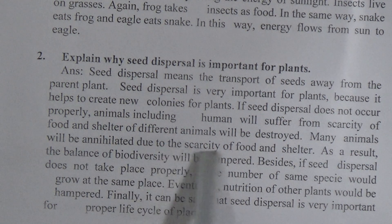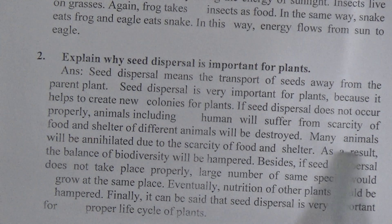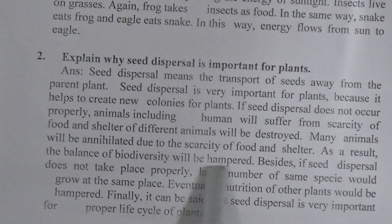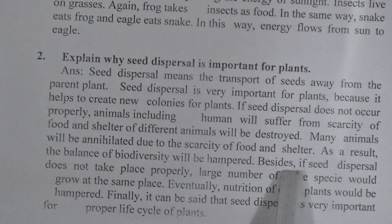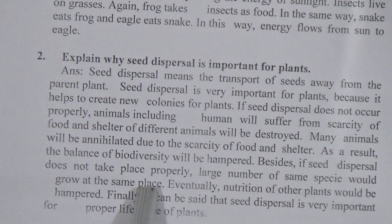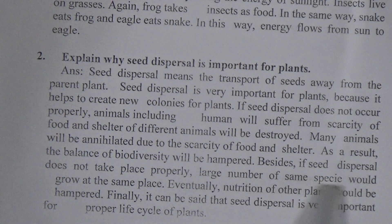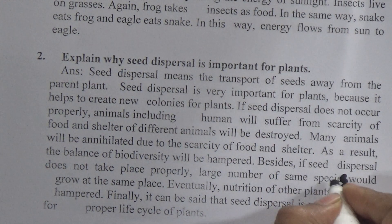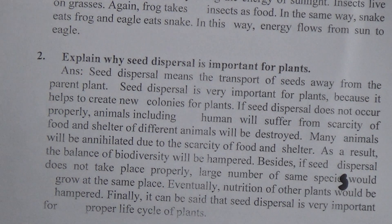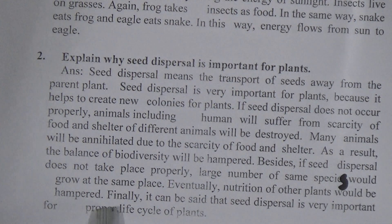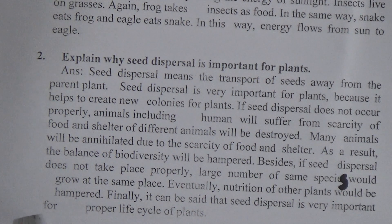Many animals will be uninhabited due to the scarcity of food and shelter, and as a result the balance of biodiversity will be hampered. Besides, if seed dispersal does not take place properly, a large number of the same species would grow at the same place, and eventually the nutrition of other plants would be hampered. Finally, it can be said that seed dispersal is very important for the proper life cycle of plants.